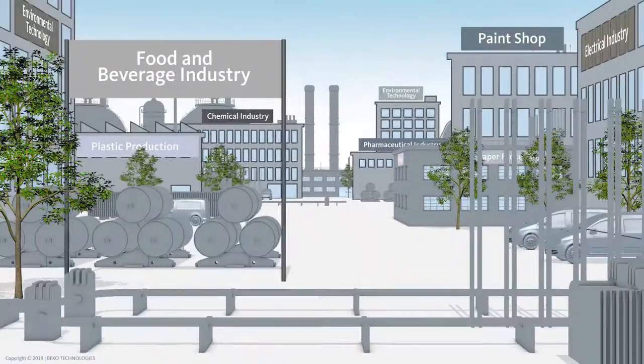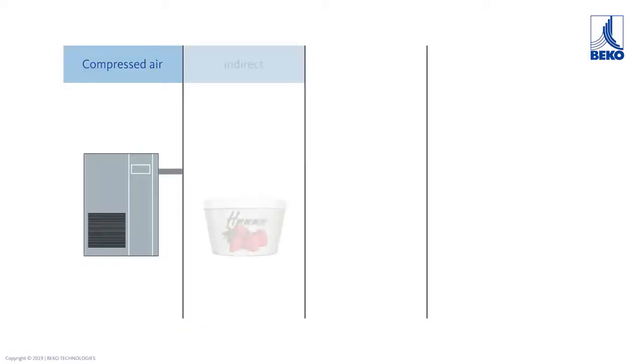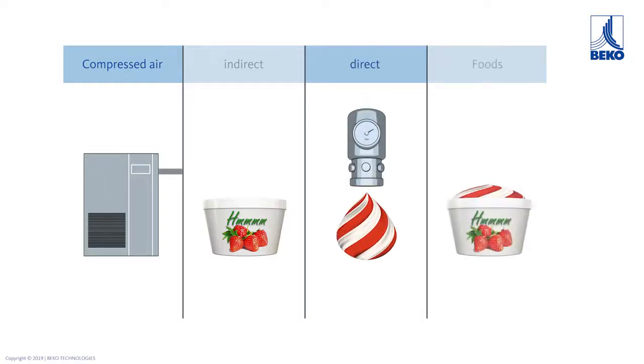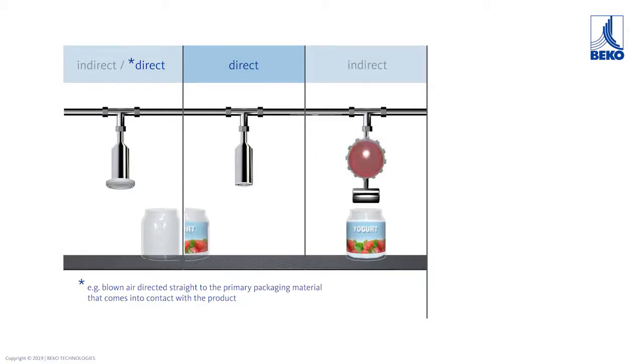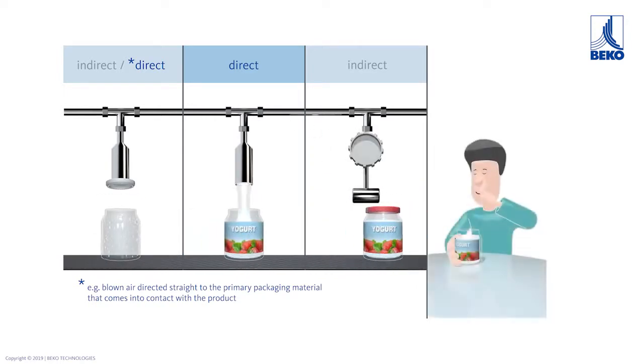No need to worry, dear Peter. Compressed air is needed in almost every production process. Compressed air comes into indirect or direct contact with the food. A high degree of care is required. In indirect contact, for example, the cleaned yogurt jar is dried with compressed air. Direct contact occurs when the product is filled with compressed air. Finally, the closure of the jar is transported with compressed air and closed.